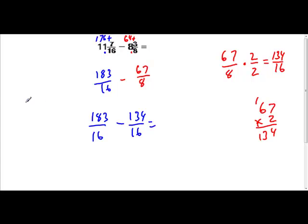So now, let's rewrite the problem as 183 over 16 minus 134 over 16. And we'll subtract that. So let's write the 183 minus 134 over here. We know our denominator is going to be the same, it's going to be 16. So let's regroup and subtract 13 minus 4 is 9, 7 minus 3 is 4, 1 minus 1 is 0. So 49 sixteenths.